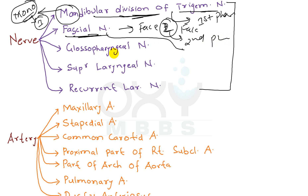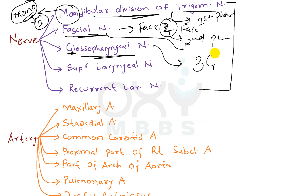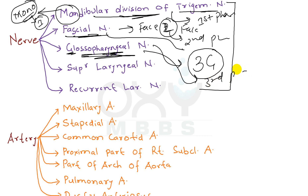Now coming to the glossopharyngeal nerve. Write 'G' from glossopharyngeal and write '3' in front of it — so this is '3G network.' It means the glossopharyngeal nerve is derived from the third pharyngeal arch.